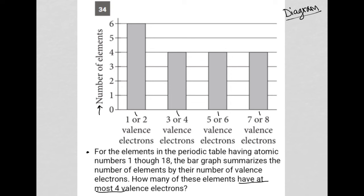Having at most four valence electrons means you could have one, you could have two, you could have three, you could have four, but you cannot have anything more than that.